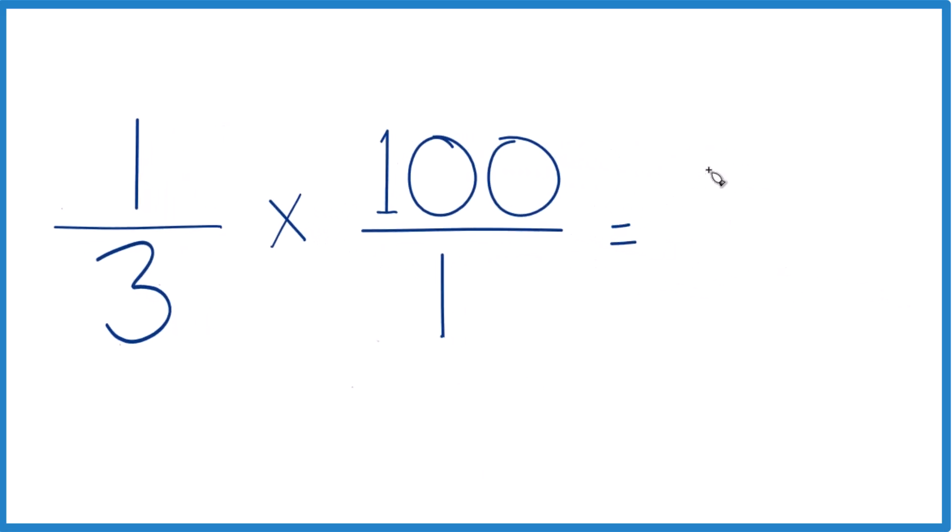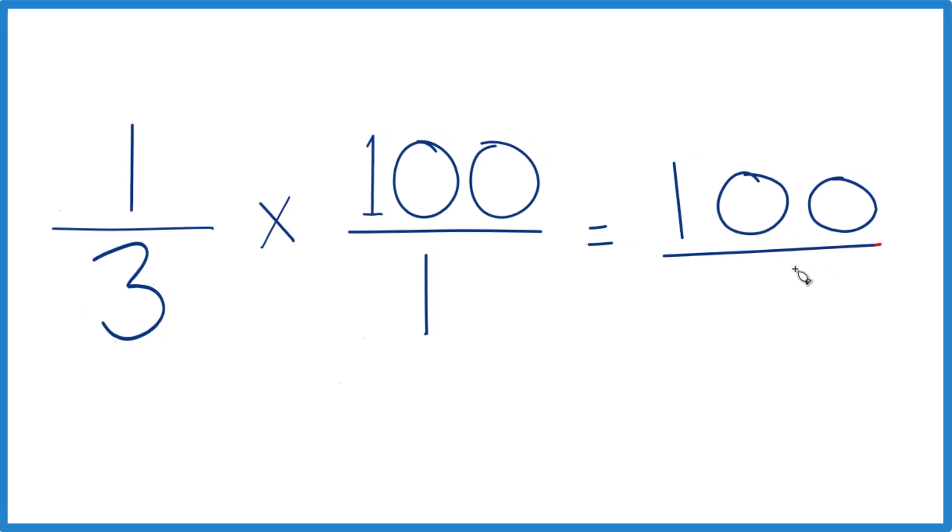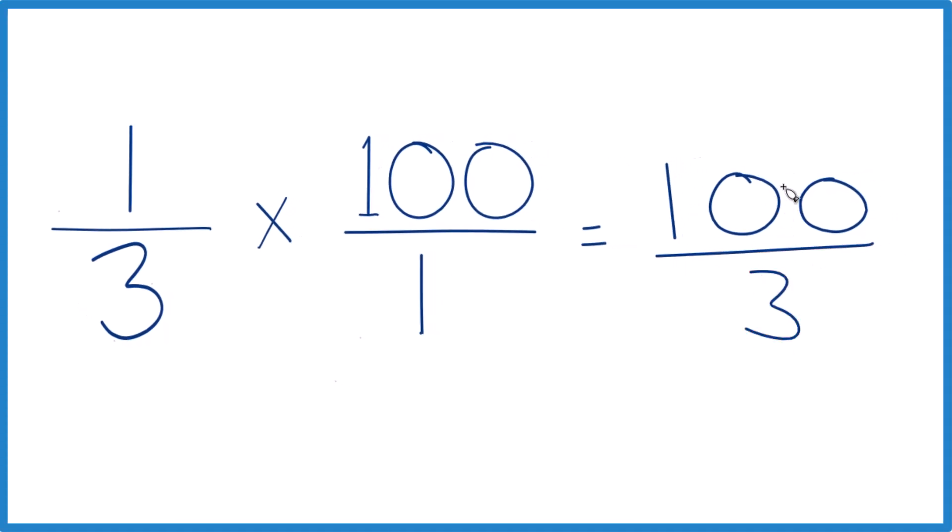So 1 times 100, that's 100, and then 3 times 1, that's 3. So we end up with 100 over 3.